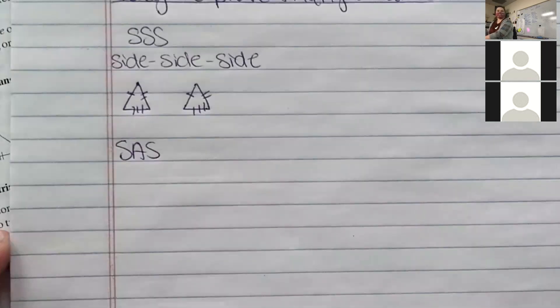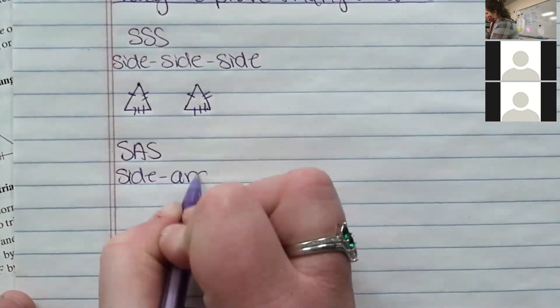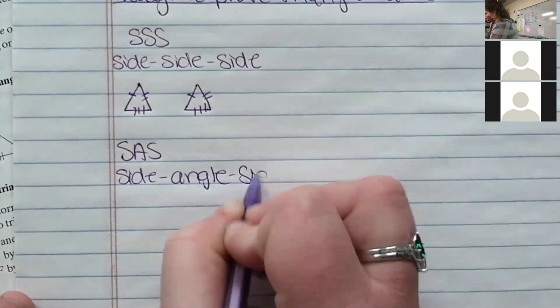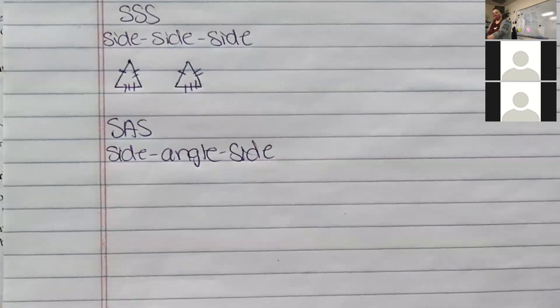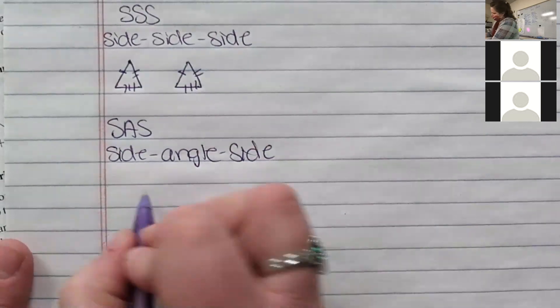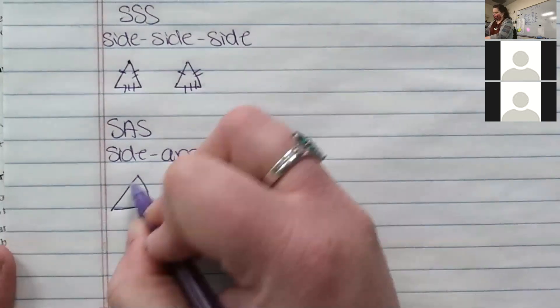Now another theorem is SAS, which is side-angle-side. So if you have a triangle and you want to compare to another one, let's say you have this side, they're both congruent.